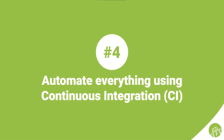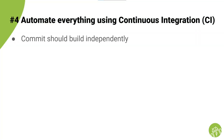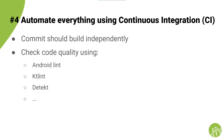Number four: automate everything using continuous integration, also known as CI. Every commit should build independently from other commits. By setting up a CI service like GitHub Actions, make sure your commit builds and all unit tests are passing and you didn't break a thing. Add Android Lint, KT Lint, Detekt, and any other services that validate your code quality to make sure you keep the code quality as it was before and that it improves as you move forward.